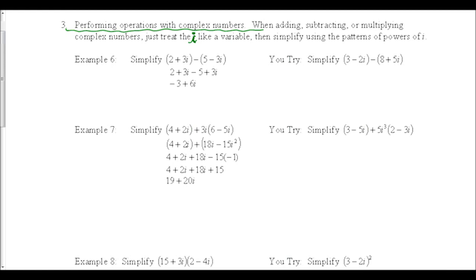Example 6: simplify (2 + 3i) minus (5 minus 3i). When subtracting, the subtraction gets distributed to both terms after it, so it becomes minus 5 and plus 3i. Then combine like terms: 2 minus 5 (no letter) gives negative 3, and plus 3i plus 3i gives positive 6i. The final answer in complex number form is negative 3 plus 6i.